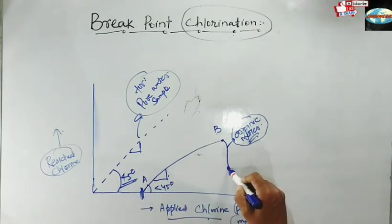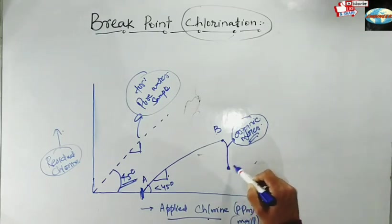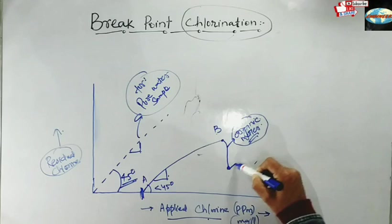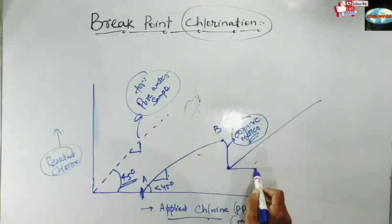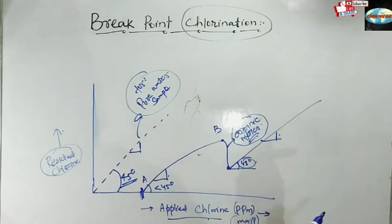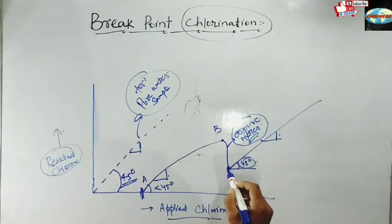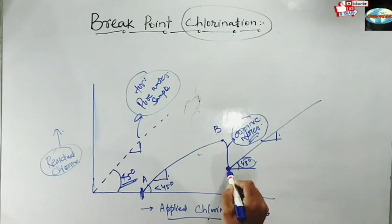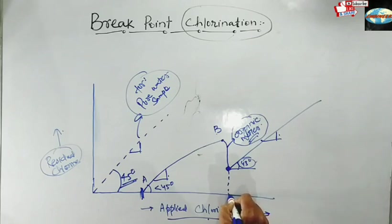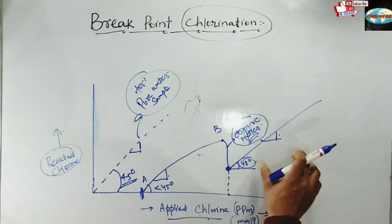After the drop, if you keep on adding chlorine, the curve rises again with a perfect 45-degree line whose slope is 1 — all the additional chlorine appears as residual chlorine. This lowest point is called the breakpoint, and the dose at this point is called breakpoint chlorination. Beyond this point, all the chlorine you apply will appear as residual chlorine.